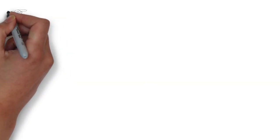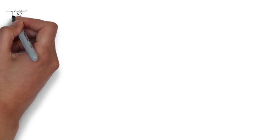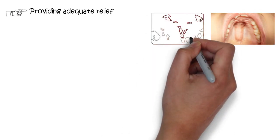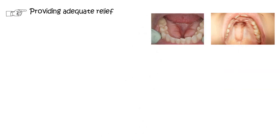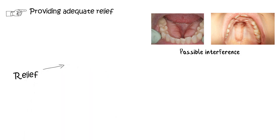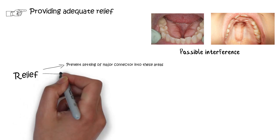It is also necessary to provide appropriate relief beneath the major connectors, especially where areas of possible interference are present — such as prominent mid-palatine sutures or any inoperable tori. This is important to avoid the major connector settling into these areas of interference.